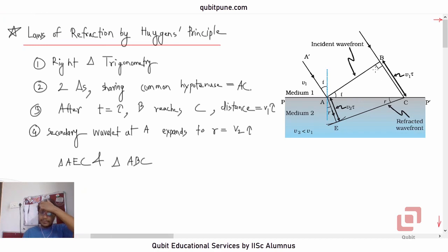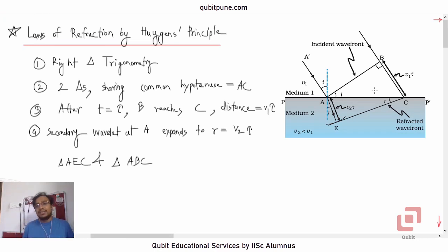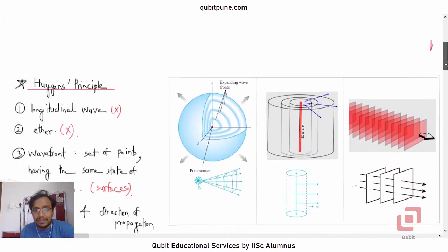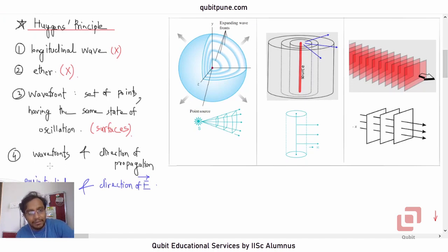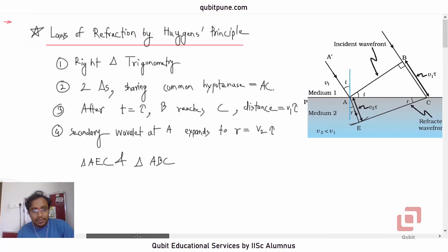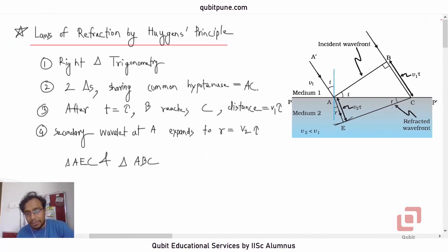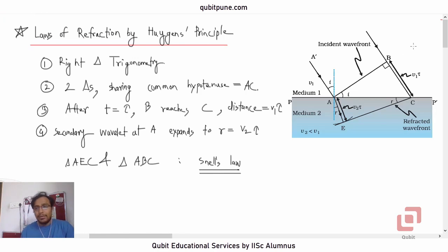Why is angle ABC = 90° and angle AEC = 90°? Because the direction of propagation and the plane of wavefronts are always perpendicular to each other. Using the common hypotenuse and right-triangle trigonometry, considering the common side AC, that proves Snell's law: N1·sin(θ₁) = N2·sin(θ₂).